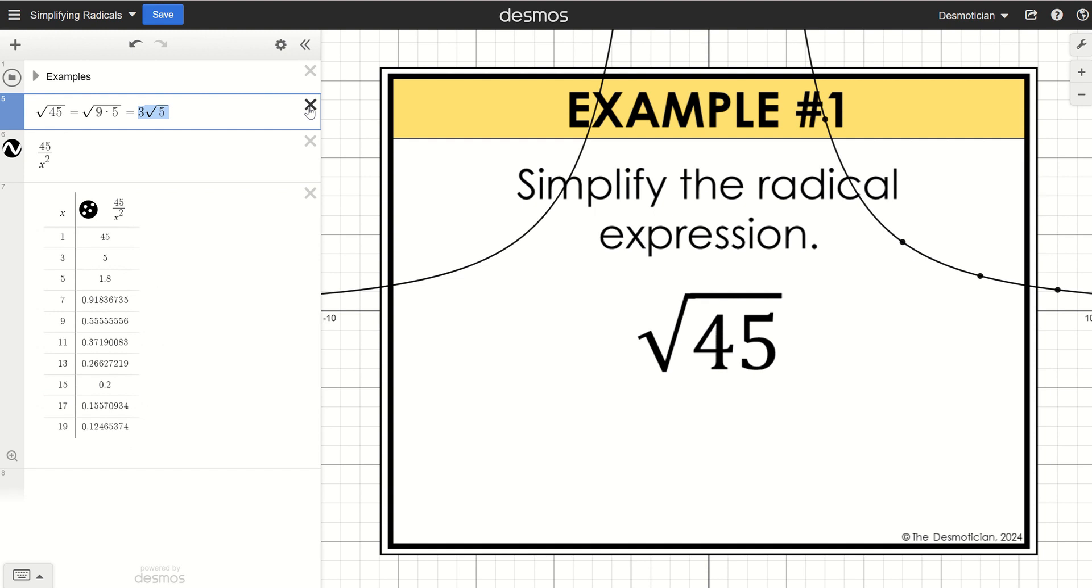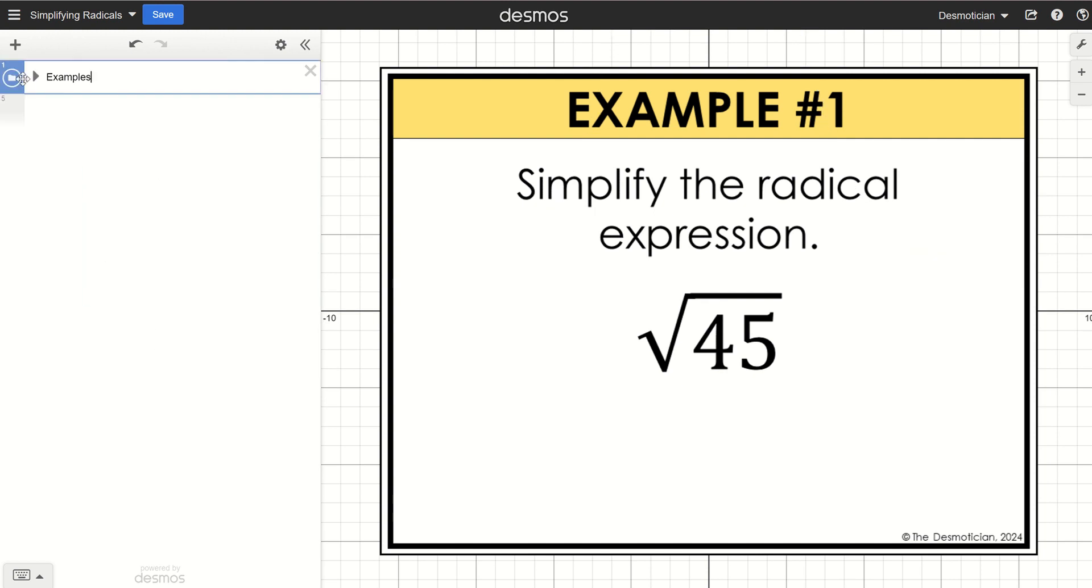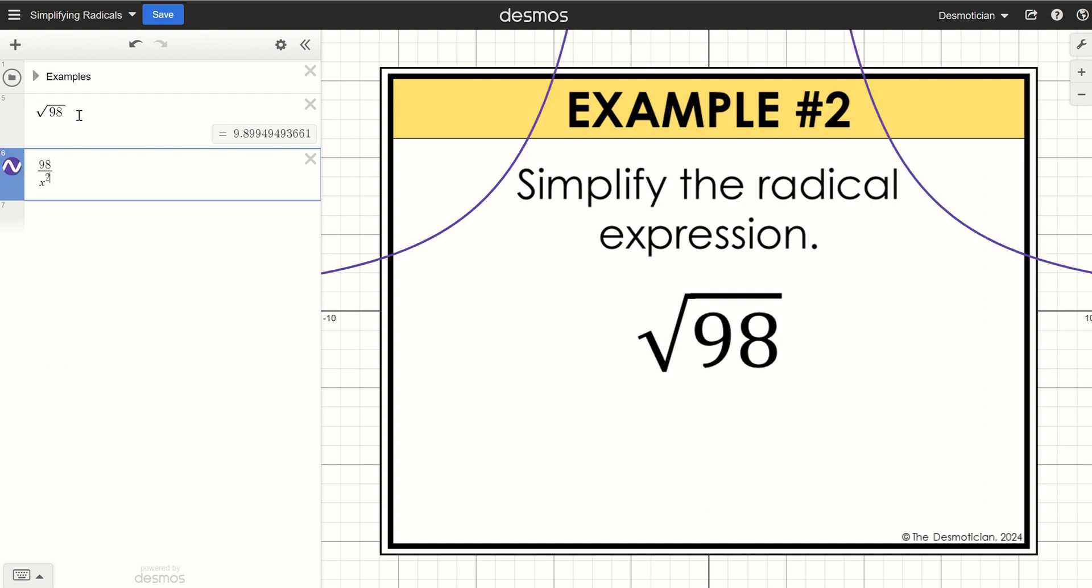Let's do another example. So example 2 is the square root of 98. I'm going to type in 98 divided by x squared. Hit that gear and change it to a table.